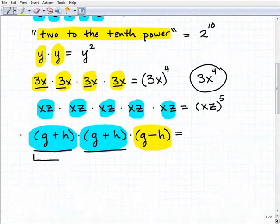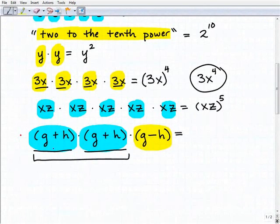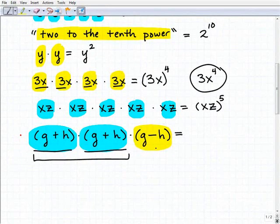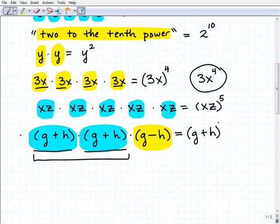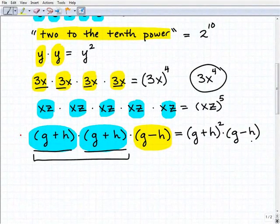So we can create a power expression right here for these first two, but not for the third one, the (g-h). So the way you would do this is (g+h) times (g+h), I can write that this way: (g+h) squared, and I'm just going to multiply that by that lonely (g-h). So that's pretty much it.